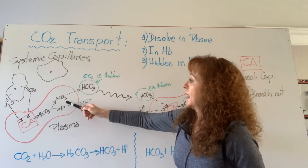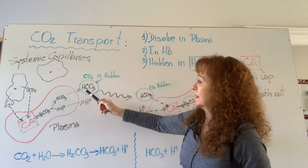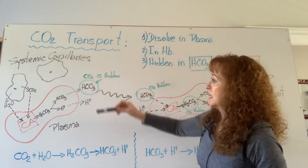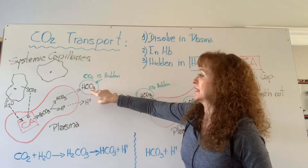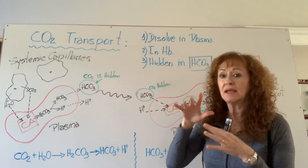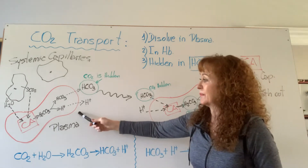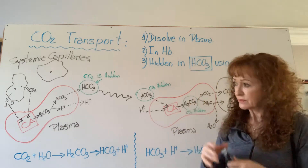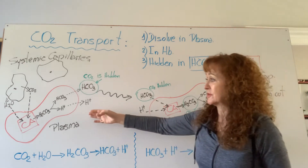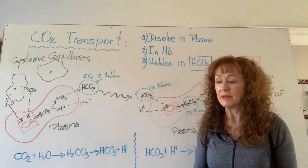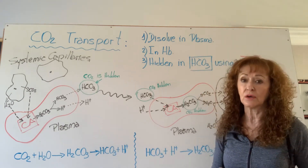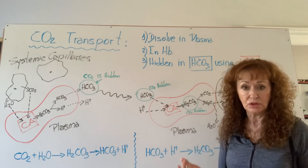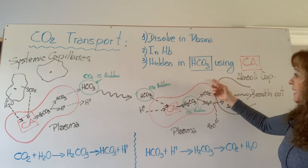The bicarbonate and hydrogen are dumped into plasma and remain in plasma. The bicarbonate is the one that contains the original carbon dioxide produced by the cell — in other words, carbon dioxide is hidden inside of this bicarbonate. They continue through the circulation, because this is happening at the systemic capillaries. The erythrocyte travels all the way back into the right atrium, then to the right ventricle, which ejects the blood into the pulmonary arteries that get into the lungs, and now we get into the alveoli capillaries.